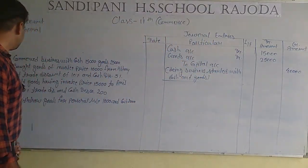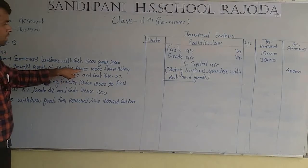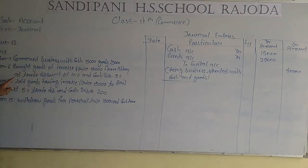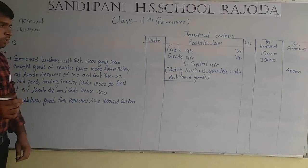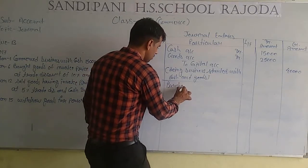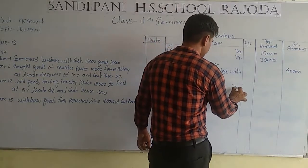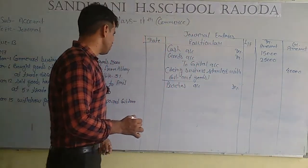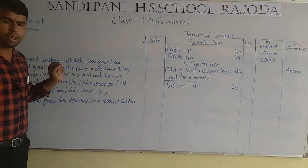Now in the second transaction: bought goods of invoice price 10,000 from Abhay at trade discount 10% and cash discount 5%. Goods are coming in, so we will write on the debit side: Purchase Account Dr. Now we have studied about trade discount.